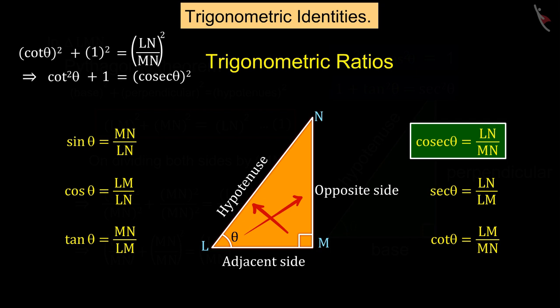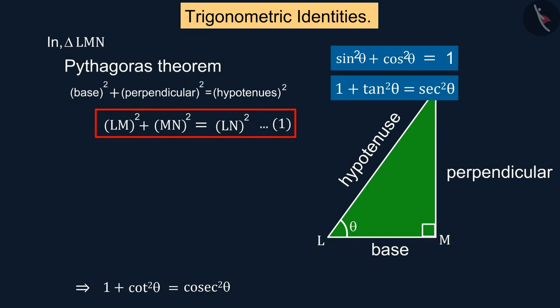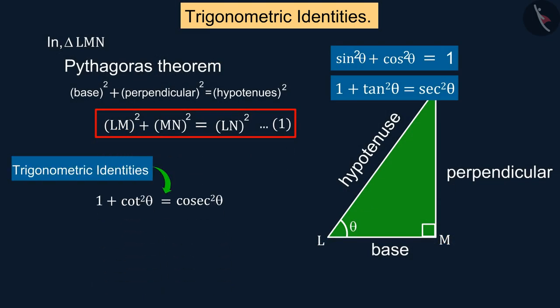From which we get the value of the above equation is 1 plus cot² θ equal to cosec² θ, which is a trigonometric identity where θ value is greater than 0 degrees and smaller than or equal to 90 degrees.